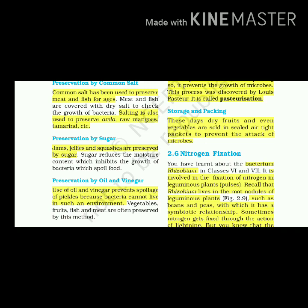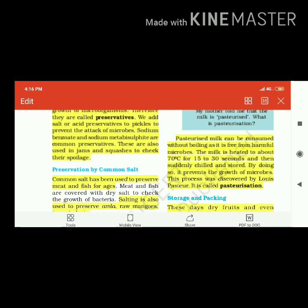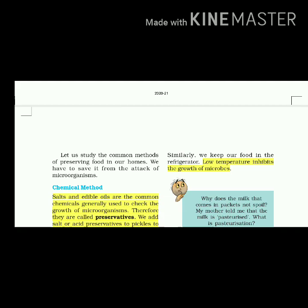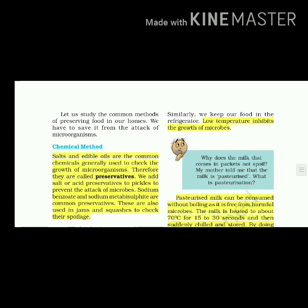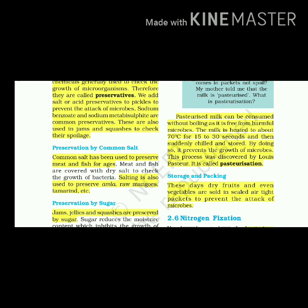Boiling kills many microorganisms. We keep our food in refrigerators - low temperature inhibits the growth of microbes. Pasteurized milk can be consumed without boiling as it is free from harmful microbes. The milk is heated to about 70 degrees Celsius for 15 to 30 seconds and then suddenly chilled and stored. By doing so, it prevents the growth of microbes. This process was discovered by Louis Pasteur and is called pasteurization.